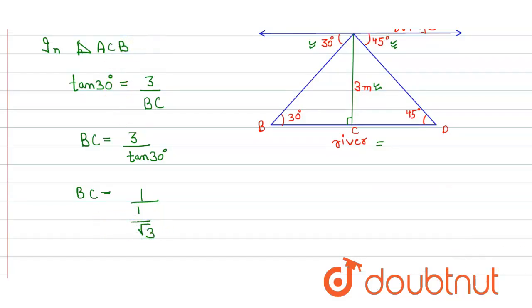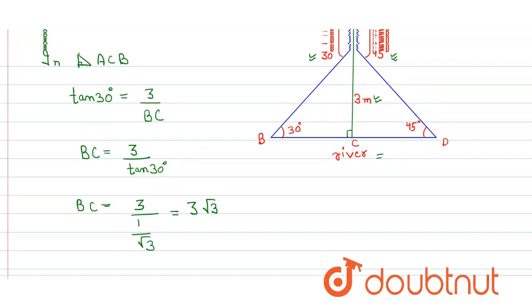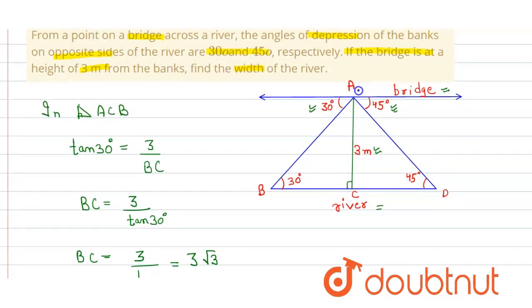So here we further solve, we get 3 into root 3. Now again we apply the trigonometric ratio in another triangle which is ACD.